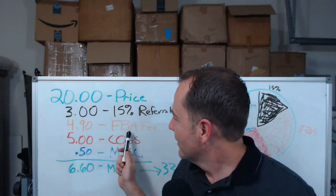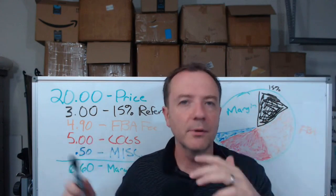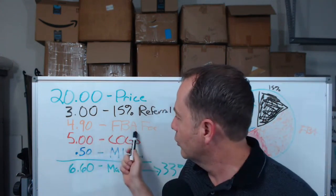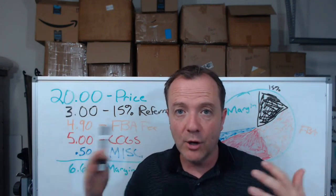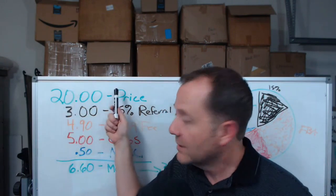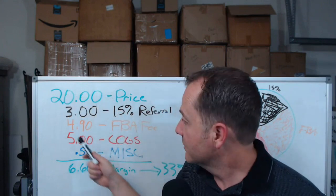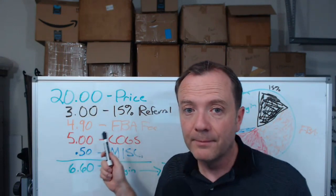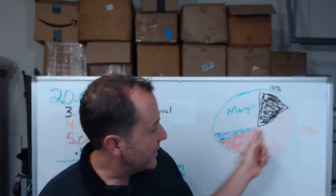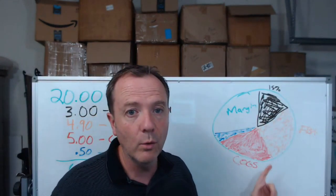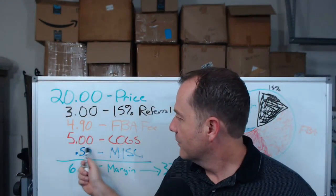Then you've got your FBA fee — the cost of getting it to the customer. Now if you're doing FBM, that's going to be your price to ship it to the customer. The top line is the revenue coming in, and now we're starting to subtract out our costs. Let's say $4.90 FBA fee, which takes up roughly a quarter of our selling price in this example.